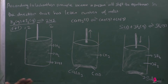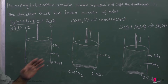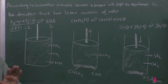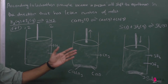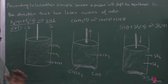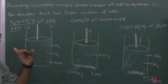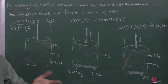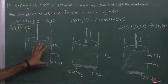So the mole count is balanced — both sides have 2 moles. Therefore, an increase or decrease in volume does not affect the equilibrium, and we cannot increase the yield of the product in this first case.